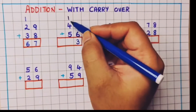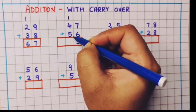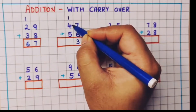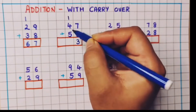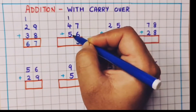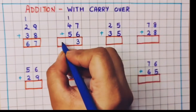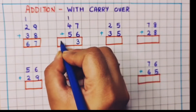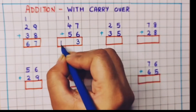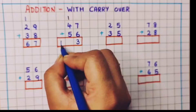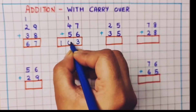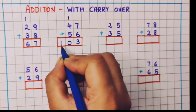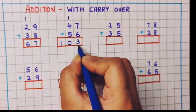Now I will do the addition of these numbers. 1 plus 4 is 5 and 5 plus 5 is 10. So here I will write 1 in the hundreds place and 0 in the tens place. So the answer is 103.